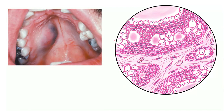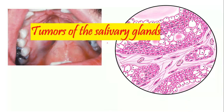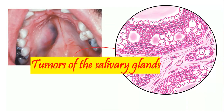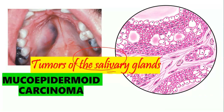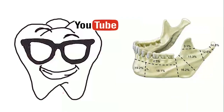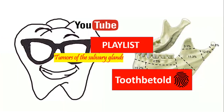Good evening everyone. In this video, we are going to talk about our fourth salivary gland tumor, which is the mucoepidermoid carcinoma. To watch more videos on the salivary glands as well as oral pathology, head on to our channel and do like, share, and subscribe.